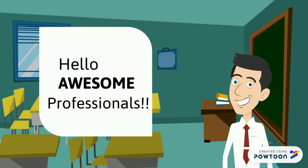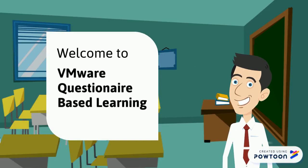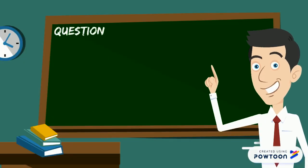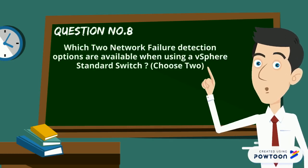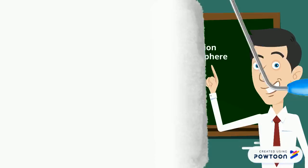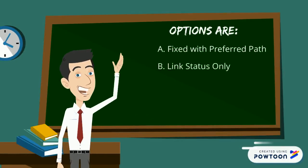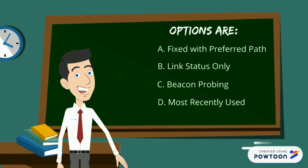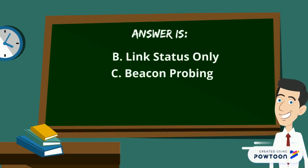Welcome to VMware questionnaire based learning forum. Here is question number eight: which two network failure detection options are available when using a vSphere standard switch? Choose two options. The options are: fixed with preferred path, link status only, beacon probing, and most recently used. The answer is link status only and beacon probing.